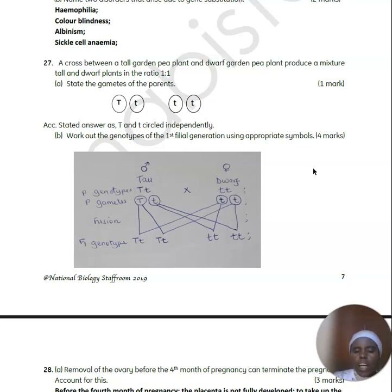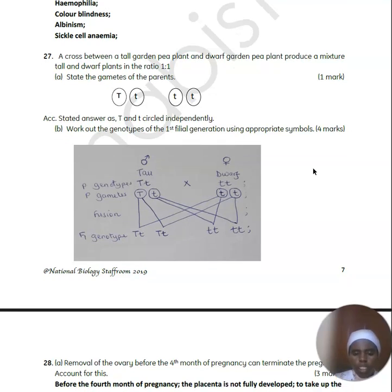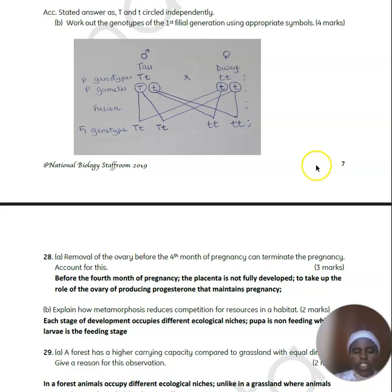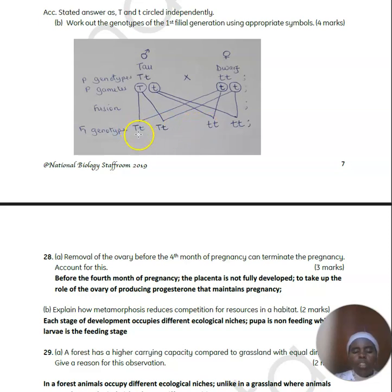A cross between a tall garden pea plant (Tt) and a dwarf pea plant (tt) produces a mixture of tall and dwarf plants in the ratio 1:1. The parental phenotypes are tall and dwarf. The parental genotypes are Tt (heterozygous tall) and tt (homozygous recessive dwarf). After the cross, we get two tall plants (Tt) and two dwarf plants (tt).